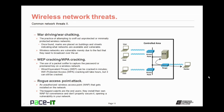Rogue access point attacks are another threat you need to be aware of. This is where an unauthorized WAP gets installed onto the network. Unfortunately, the biggest culprits are the end users themselves. They install their own wireless access points for convenience and then don't properly secure it, opening a vulnerability into your network. You need to periodically check for rogue access points on your networks, even if you don't have wireless installed.